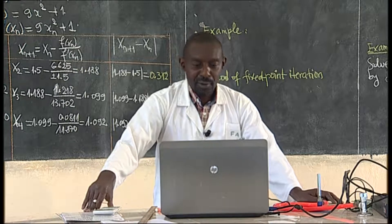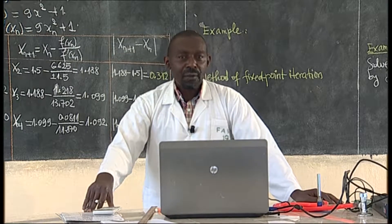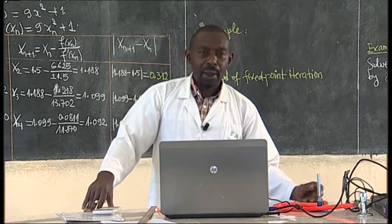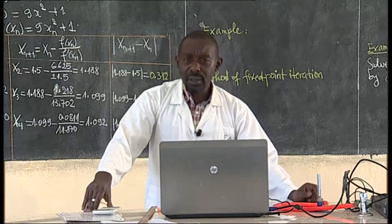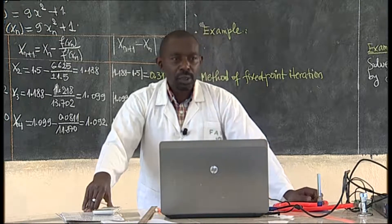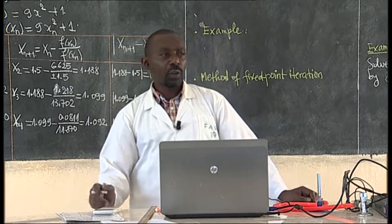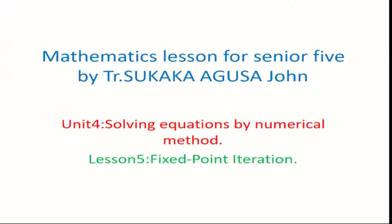In our unit four of solving equations by numerical method. We have been discussing about linear interpolation, locating the root by change of variable, by change of sign, locating the root by graphical method. We have been seeing how we can solve equations using Newton-Raphson method. So this time, we are going to continue with those iterative methods, solving equations using a new method known as fixed point iterations. But before that, let us pass through Newton-Raphson method, and you have an exercise on that.